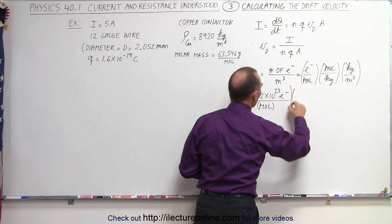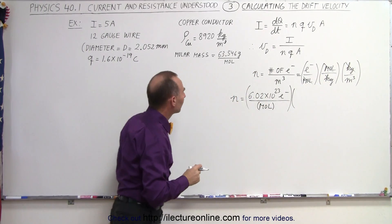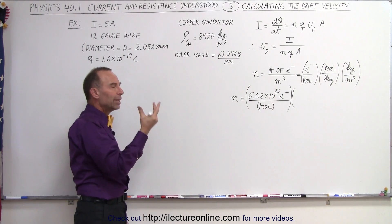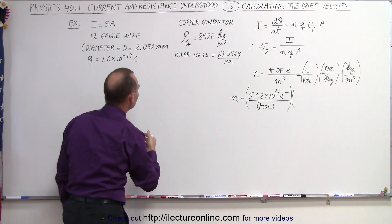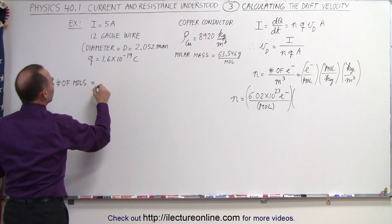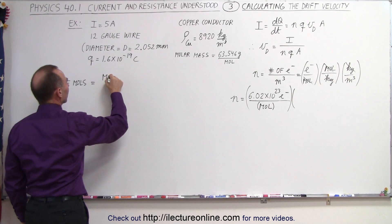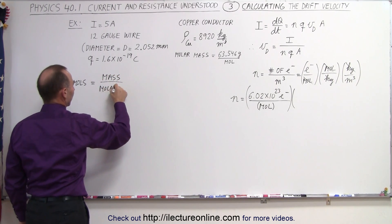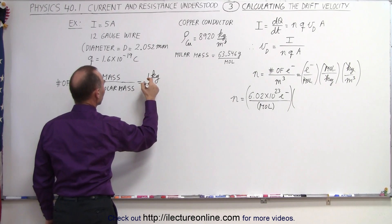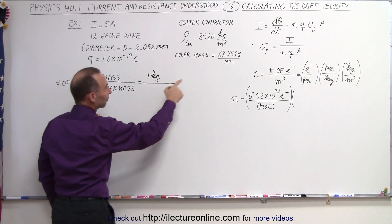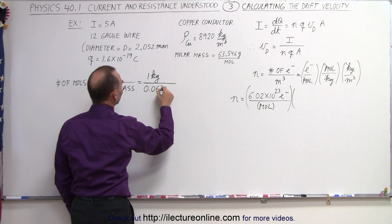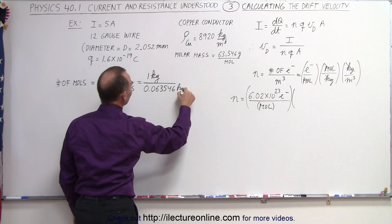Now we need to calculate the number of moles per kilogram. Since we know the molar mass is 63.546 grams per mole, and we know the density of copper, we need to figure out how many moles there are per kilogram. The number of moles is equal to the mass divided by the molar mass. Taking one kilogram, we divide by the molar mass converted to kilograms per mole, which is 0.063546 kilograms per mole. The kilograms cancel out, and we end up with moles.